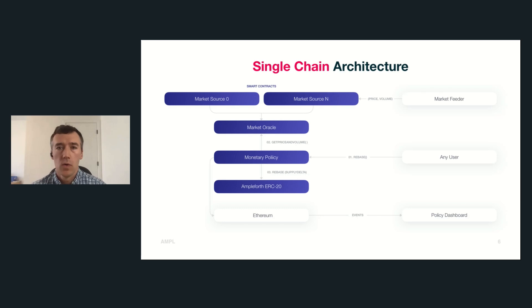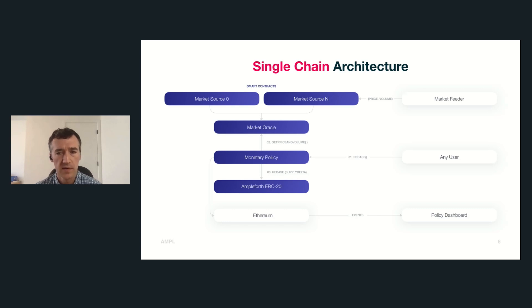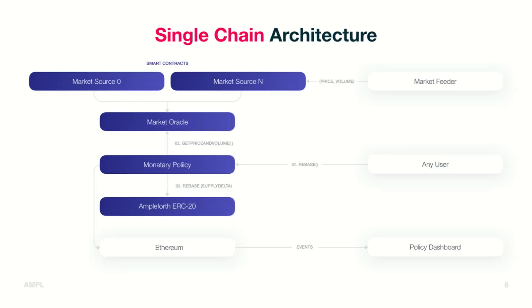On a single chain, there are only a few components: the supply policy at the center, and the action that rebalances the supply — called a rebase — which anyone is allowed to call. The rebase gets data from an oracle that medianizes from many different input feeds. Then there's the token itself, directed by the supply policy, which is what people transact with and make contracts with.